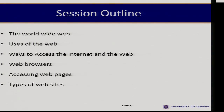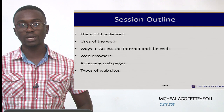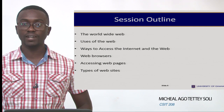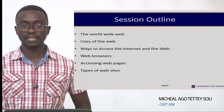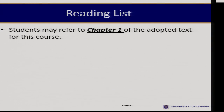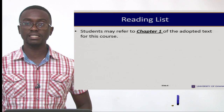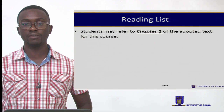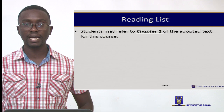The outline for this session is as follows. We'll first talk about the World Wide Web, the users of the Web, ways of accessing the Internet and the Web, web browsers and their characteristics, how to access web pages, and finally, types of websites. We have a reading material for the course, and students can find more information from the first chapter of that reading material, which will be provided at the end of the session.